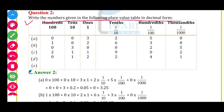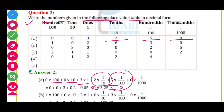Dekho kaise likhna hai — write the numbers given in the following place value table in decimal form. To seedha answer likhna hai: 3.25. Kaise aaya? 100s pe 0, 10s pe 0, ones place mein 3 — 3 × 1. 10th mein 2 — 2 × 1/10 = 0.2. 100th mein 5 — 5 × 1/100 = 0.05. So 3 + 0.2 + 0.05 = 3.25.